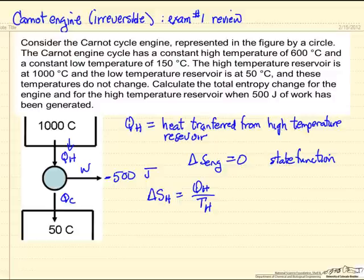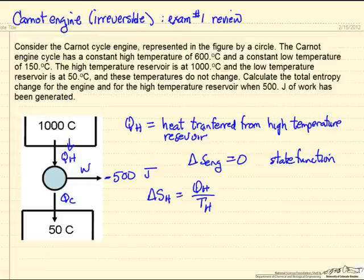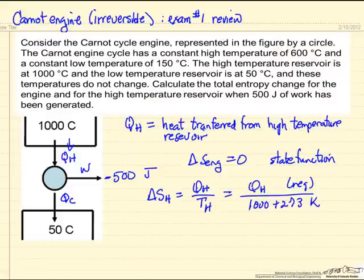The entropy change for the high temperature reservoir is QH over TH. There's a couple things to keep in mind: we have to make sure we're using the QH from the reservoir, which is going to be a negative value, and TH we have to use absolute temperature, so 1000 plus 273, so the temperature is in Kelvin.